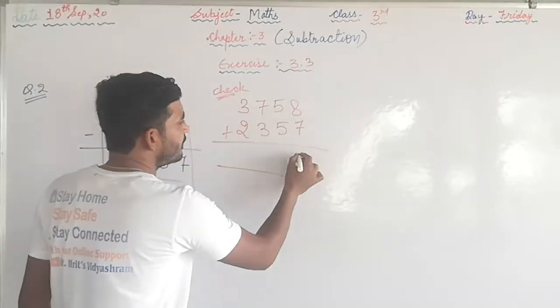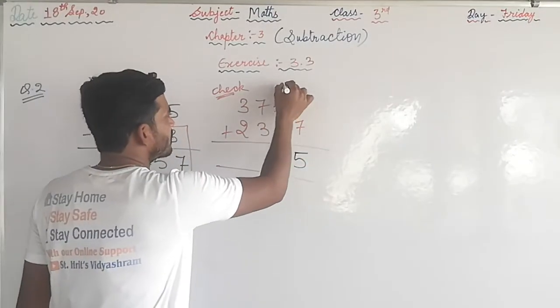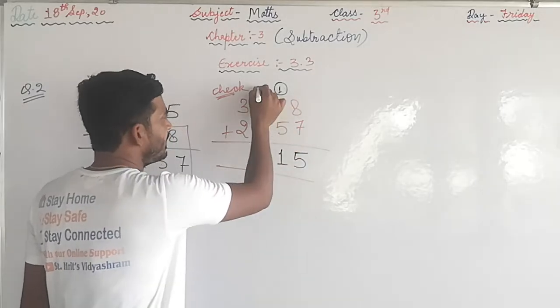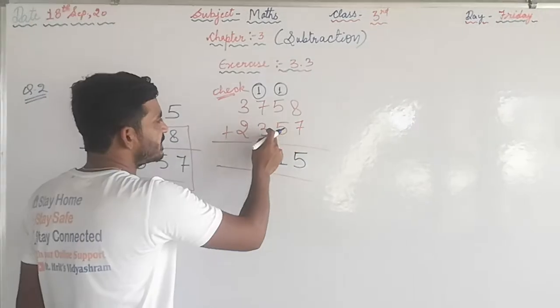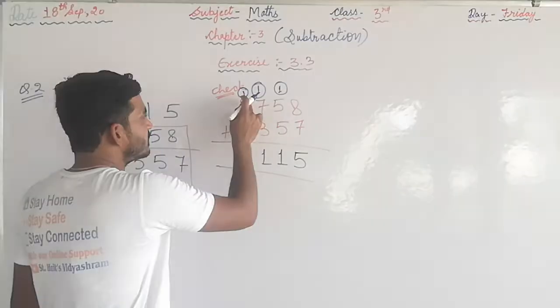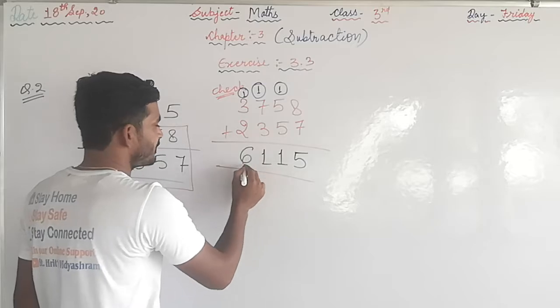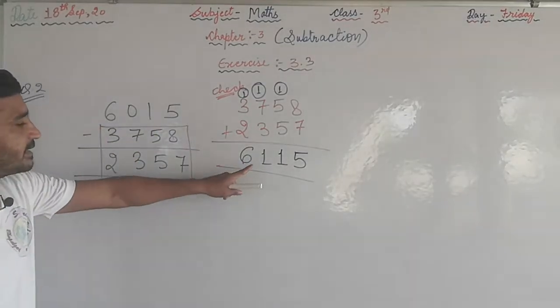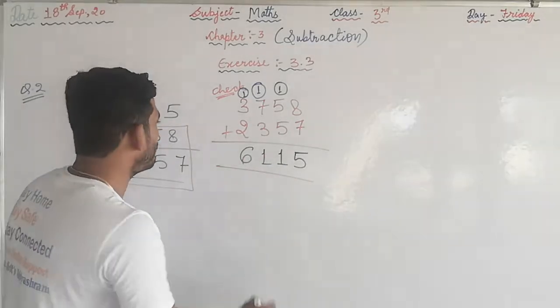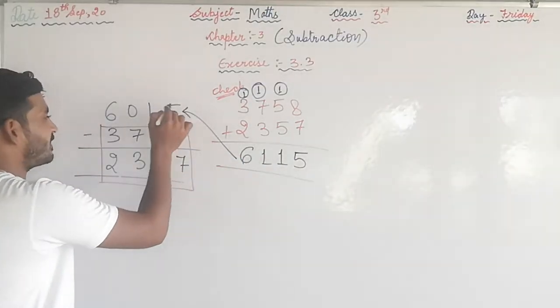8 plus 7, 15, write 5 carry 1. 5 plus 5, 10, plus 1, 11, write 1 carry 1. 7 plus 3, 10, plus 1, 11, write 1 carry 1. 3 plus 2, 5, plus 1, 6. The answer is 6115, which is not right.